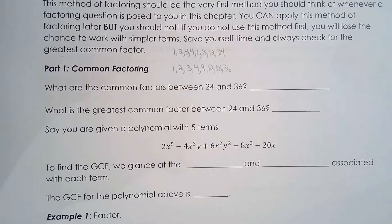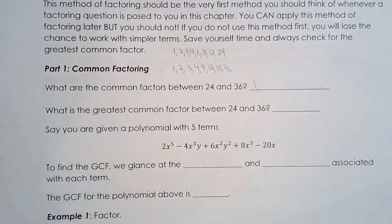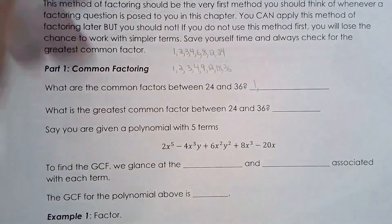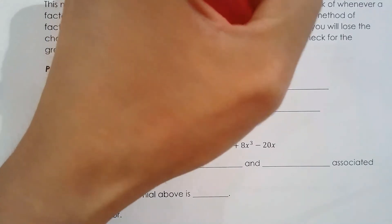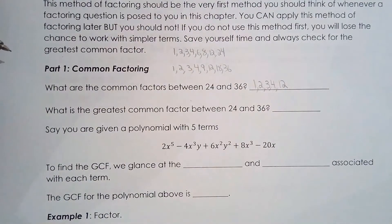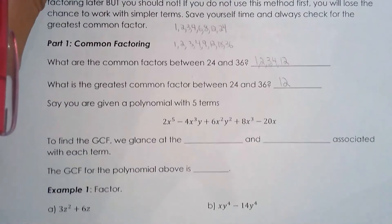If you don't know your times table, I would highly recommend learning it — you really have to know your times table for this whole unit. It takes a few days or maybe a week to master. So what are the common factors between 24 and 36? 1, 2, 3, 4, and 12. What is the greatest common factor? Definitely 12 — 12 is the greatest common factor.